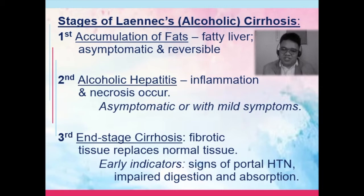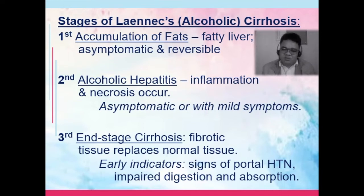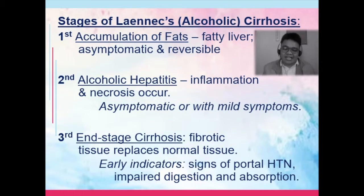There are three stages. The first is accumulation of fats and alcoholic hepatitis, then end-stage cirrhosis. In the first stage, the liver becomes fatty. You'd expect an increase of liver enzymes such as SGPT and SGOT. The patient has the possibility to be asymptomatic, and this stage is still reversible. It is usually diagnosed incidentally during physical examinations wherein hepatomegaly is palpated by the practitioner.